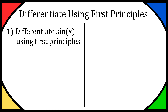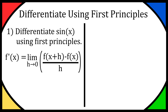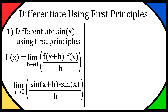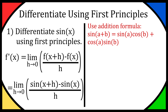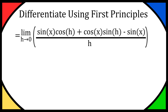Hey everyone, so today I'm going to show you how to differentiate sine of x using first principles. This might be a bit of a longer video, so please bear with me, and if you have any comments or questions just drop them down below. Starting with the first principles equation: f′(x) equals the limit as h tends to 0 of f(x plus h) minus f(x) over h. Subbing in f(x) equals sine of x, we get sine(x plus h) minus sine(x) over h. We then use the addition formula: sine(a plus b) equals sine(a)cos(b) plus cos(a)sine(b), applied to sine(x plus h). So we have sine(x)cos(h) plus cos(x)sine(h) minus sine(x), all over h.